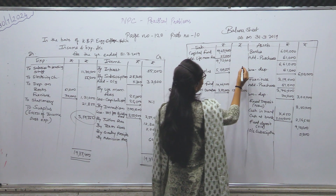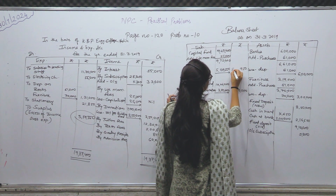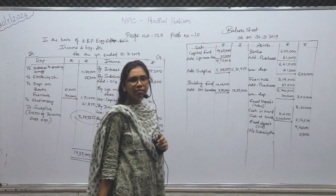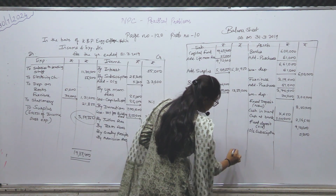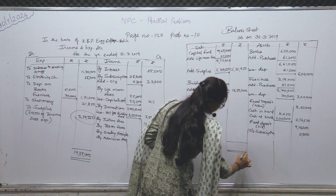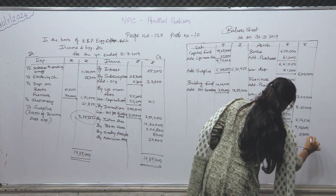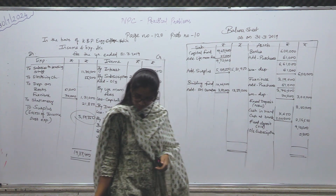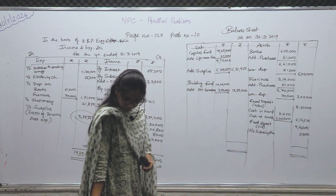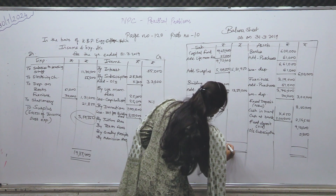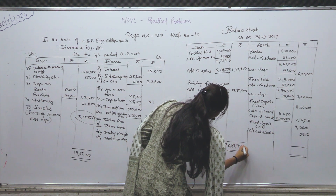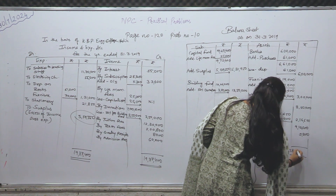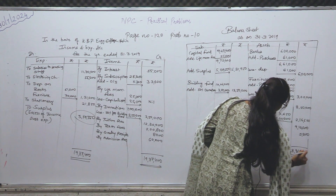5,59,550 यहाँ आपका आ गया surplus। Surplus को capital fund में add: 5,59,550। Outer में: 15,31,950। Balance sheet tally होना चाहिए। Check करो — tally हो रहा है के नहीं। Total: 28,81,950 — 28,81,950। Yes!